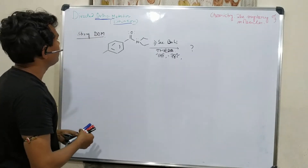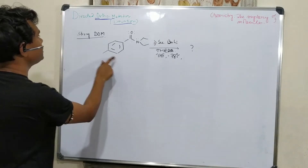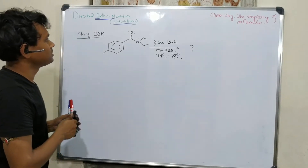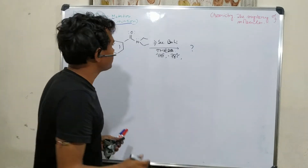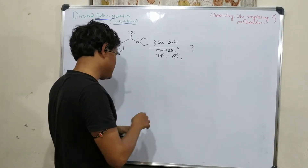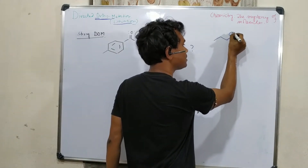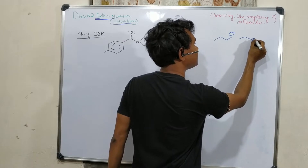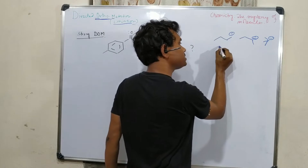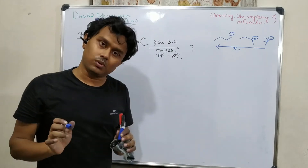Directed ortho-lithiation can be strong or weak. Strong means it can coordinate or donate more. There are three types of butyllithium: primary, secondary, and tertiary. Nucleophilic character increases from primary to secondary, while from secondary to tertiary, basicity increases.